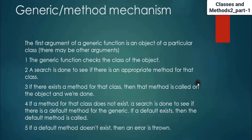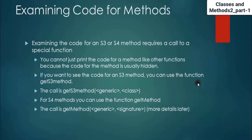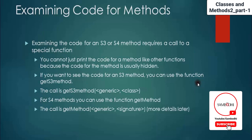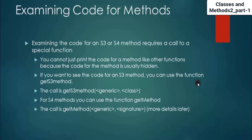Now let's examine the code for methods. Examining the code for an S3 or S4 method requires a call to a special function — you cannot just print the code for a method like other functions, because the code for the method is usually hidden. If you want to see the code for an S3 method, you can use the function getS3method — the call is getS3method(generic, class). For S4 methods, you should use getMethod — the call is getMethod(generic, signature).